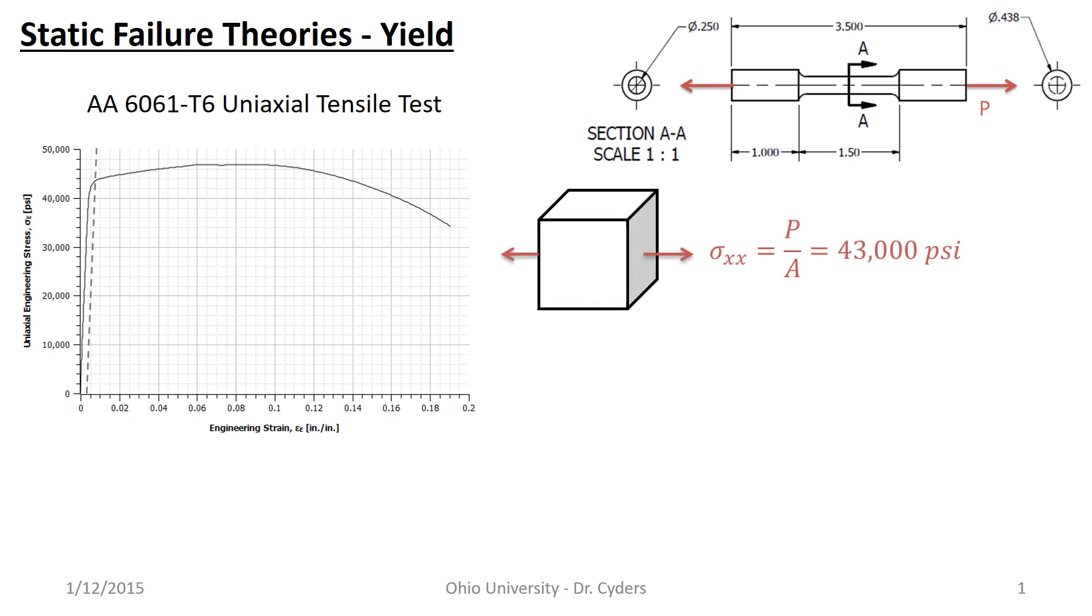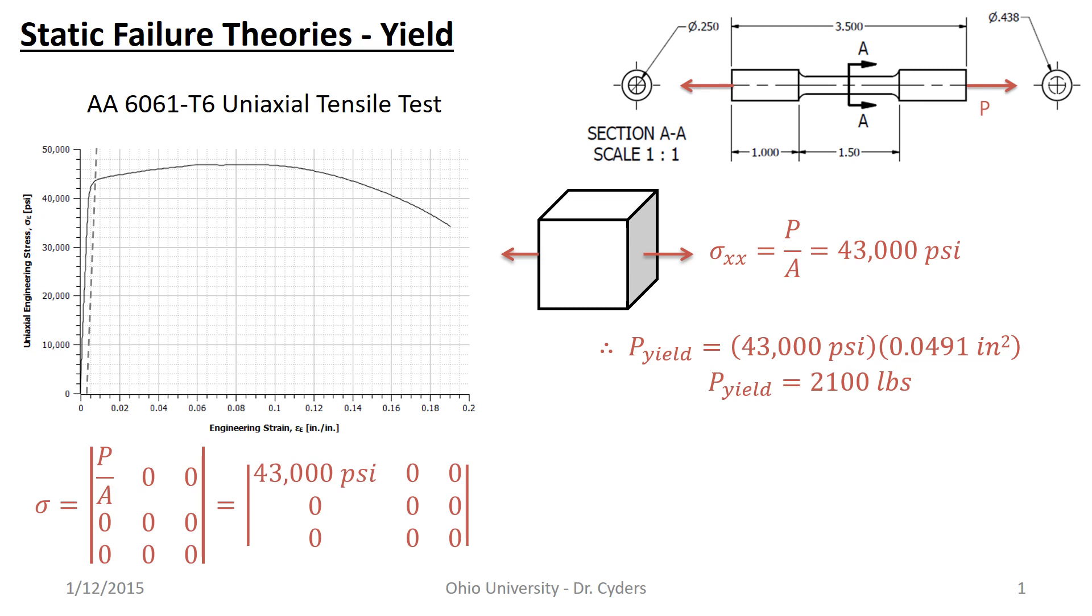Now, in this case, this is the stress state that we had. We had this very simple uniaxial tensile test, P over A, and that was 43,000 PSI when yielding started to occur. Therefore, the yield load was 2,100 pounds. We can back-calculate that knowing the diameter here. And so we had this stress state. It was uniaxial tensile stress. Here is our stress tensor. It can't get simpler than this.